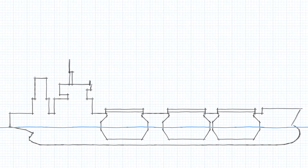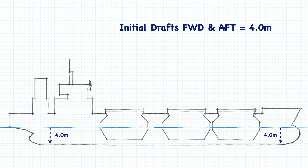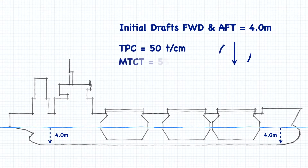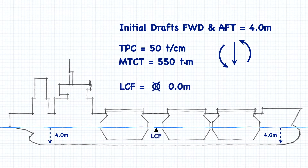Let's say that our ship is sitting at even keel drafts of 4 meters. At that draft, our tons per centimeter immersion is 50 tons, the moment to change trim one centimeter is 550 ton meters, and the center of flotation is at midships.